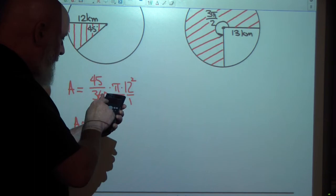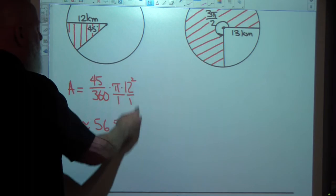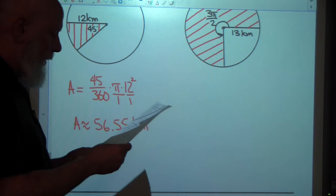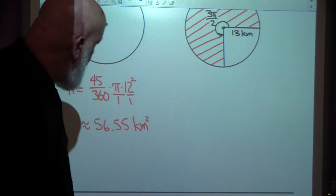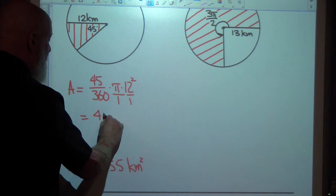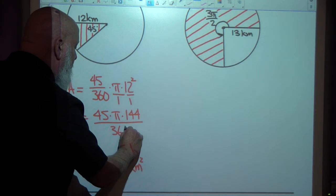So the area will be approximately whatever this happens to be. 45 degrees over 360. That's a fraction of the rotation all the way around the circle. So 45 divided by 360 times pi times 144. Equals 56.55. And that will be in square kilometers. Let's see what the answer key says. It didn't round. How strange is that? I'm thinking that's correct, but we'll go ahead and do what they do.